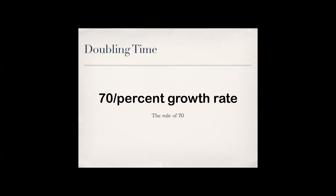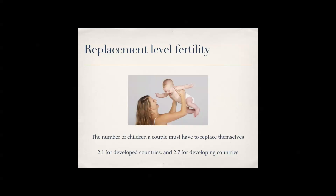Replacement level fertility is the number of children a couple must have to replace themselves. Right now it's 2.1 for developed countries like America, and 2.7 for developing countries.